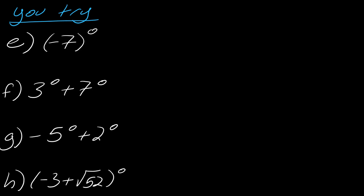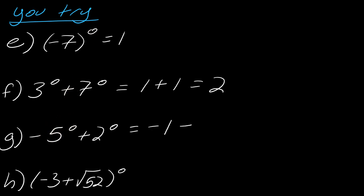Pause the video and try these, then hit play when you're ready. For example E, this is in parentheses — so even though it's a negative number, because it's in parentheses, the zero exponent wipes it all out and the whole thing equals 1. Without parentheses, it would be negative 1. For example F, 3 to the zero is 1 and 7 to the zero is 1, so this is really 1 plus 1, which equals 2. For G, negative 5 to the zero without parentheses equals negative 1, while 2 to the zero equals 1. Finally, for example H, don't let it throw you off — it's this whole expression to the zero power; that exponent does not distribute, so it's just the whole thing to the zero power, which still equals 1.